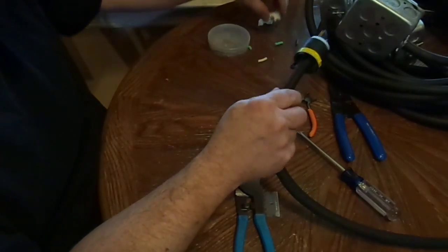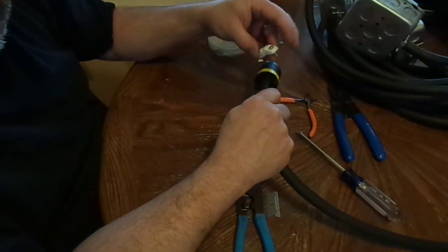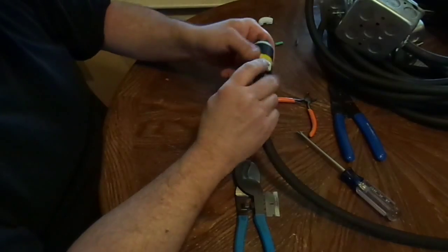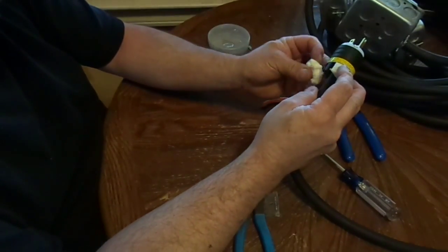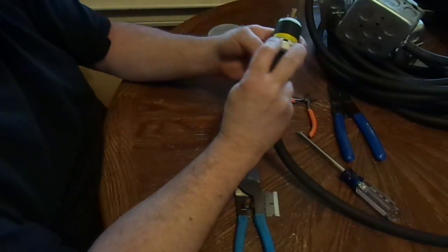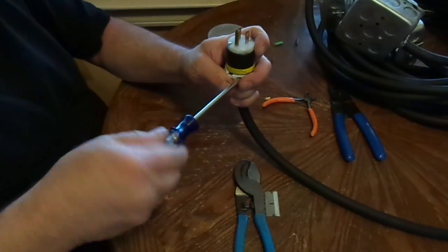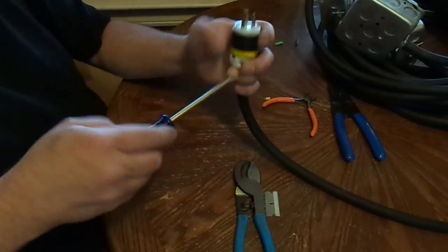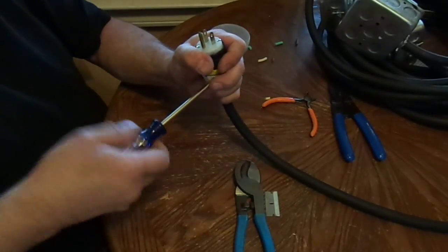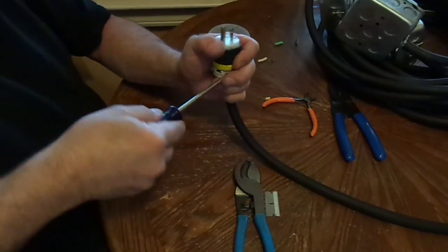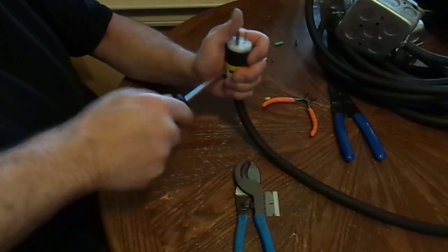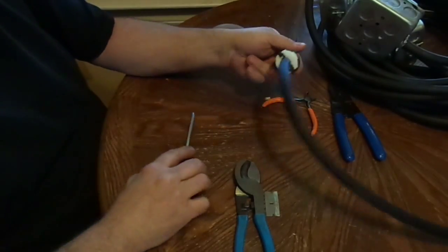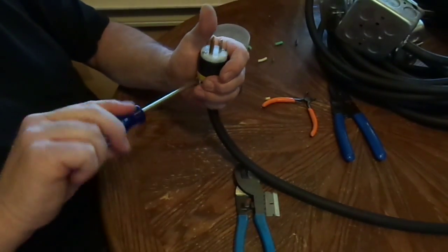So now the last thing is put the strain relief on. And it's got this little cutout that it slides on, like so. And then we'll do the other side, like so. And I like to tighten them evenly, one side at a time, just to make sure that it's not going to kick it sideways. That's a pretty good grip on that cable right there. And there you go.